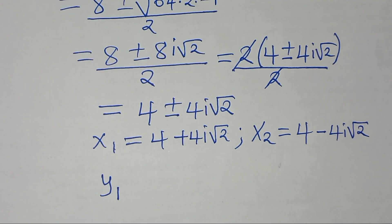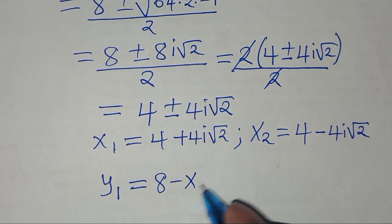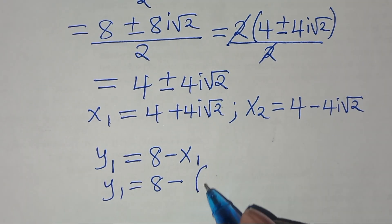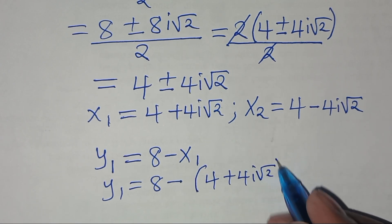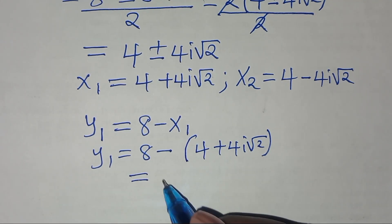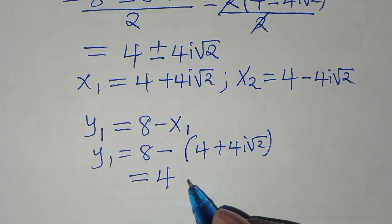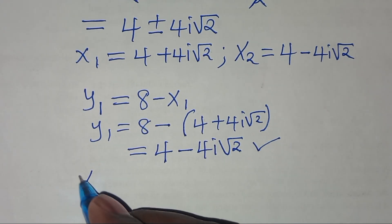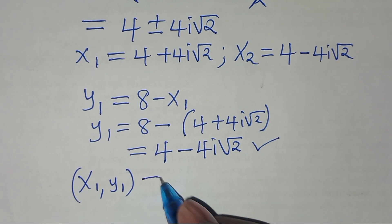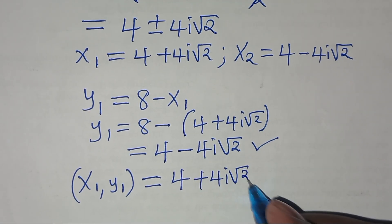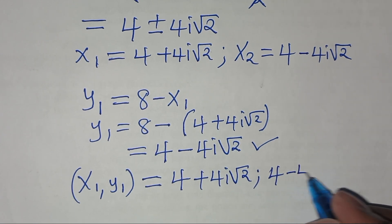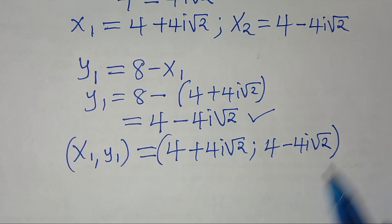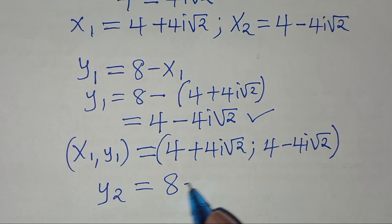Now let's find the corresponding y values using equation 3, which is y equals 8 minus x. So y1 equals 8 minus x1 equals 8 minus (4 plus 4i root 2) equals 4 minus 4i root 2. Therefore the first solution pair is x1, y1 equals (4 plus 4i root 2, 4 minus 4i root 2).